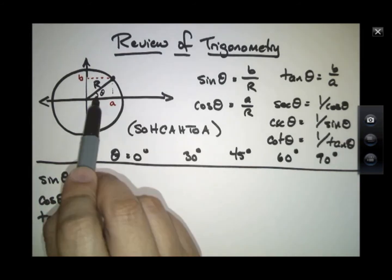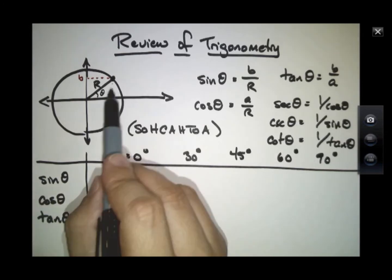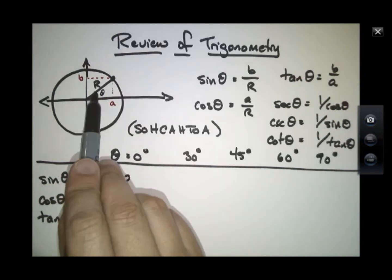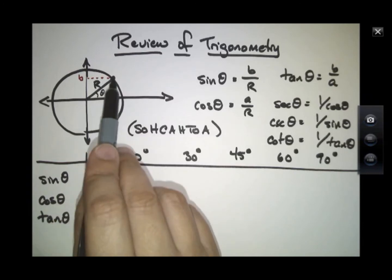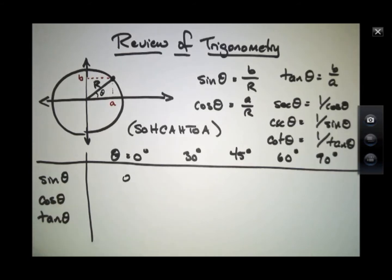When theta is very small and goes to 0, then this side B goes to 0, and the sine of that angle is 0. However, this adjacent side, as this point moves around to the circle over here, the adjacent side becomes just the radius.